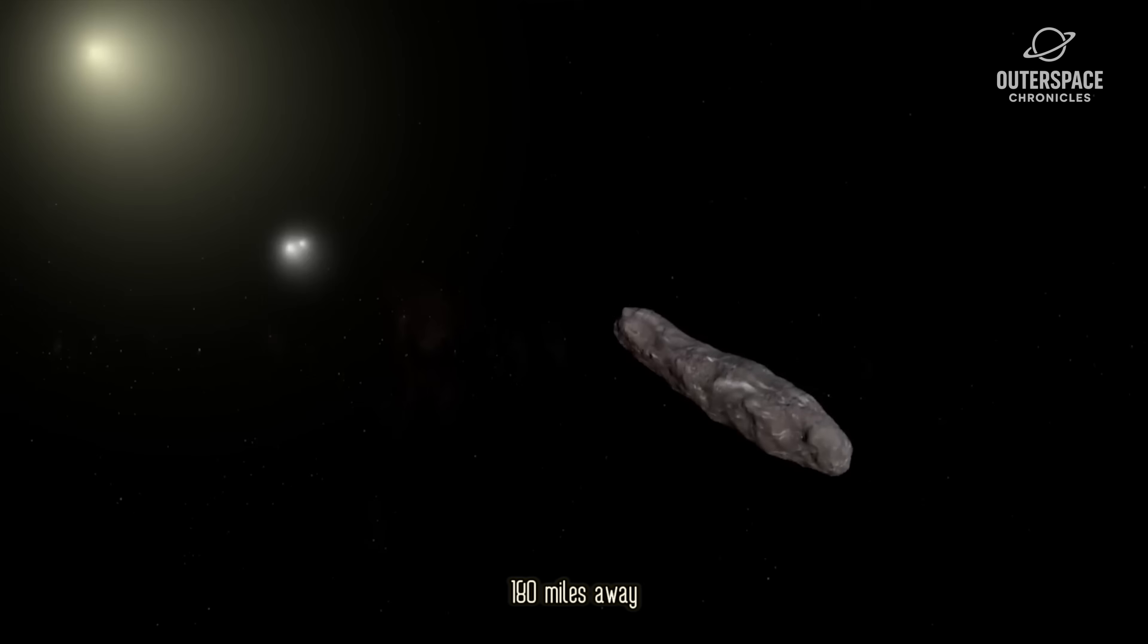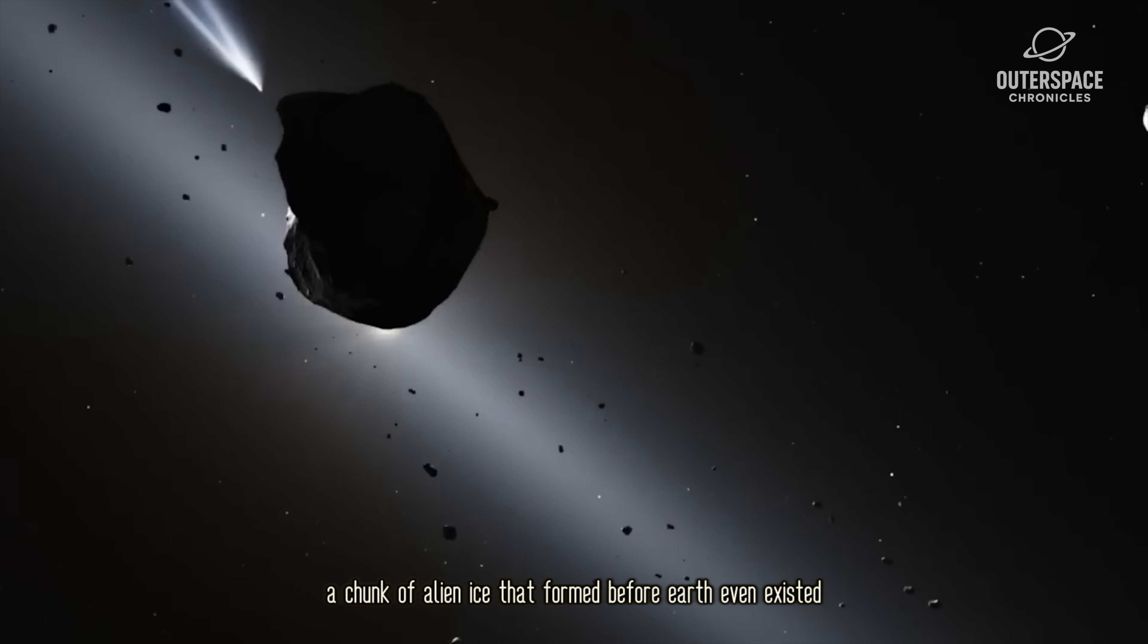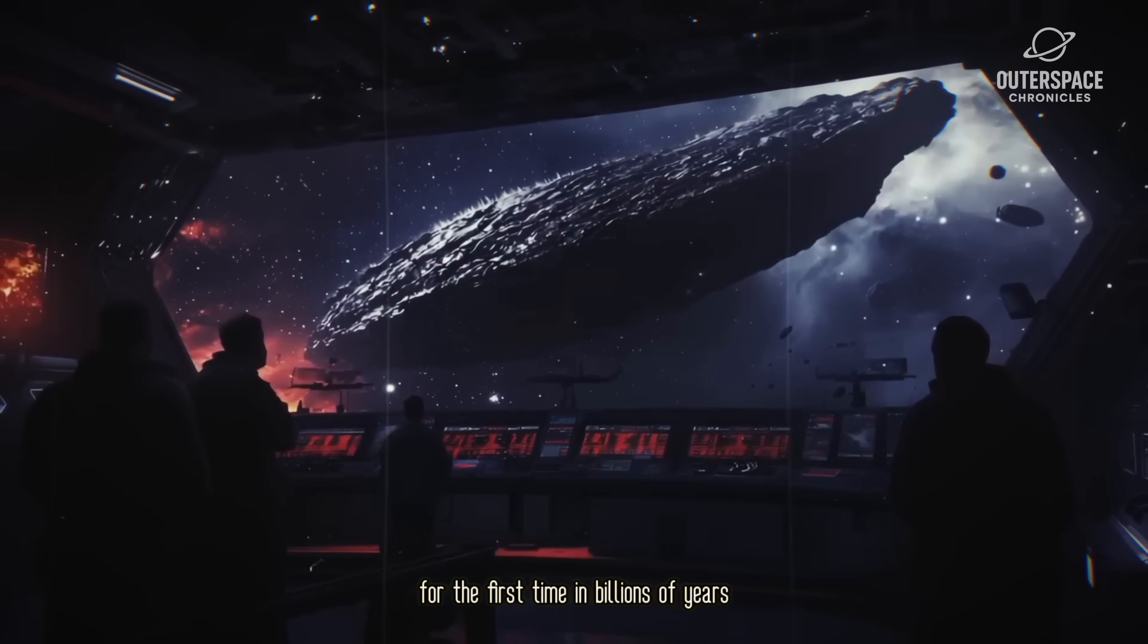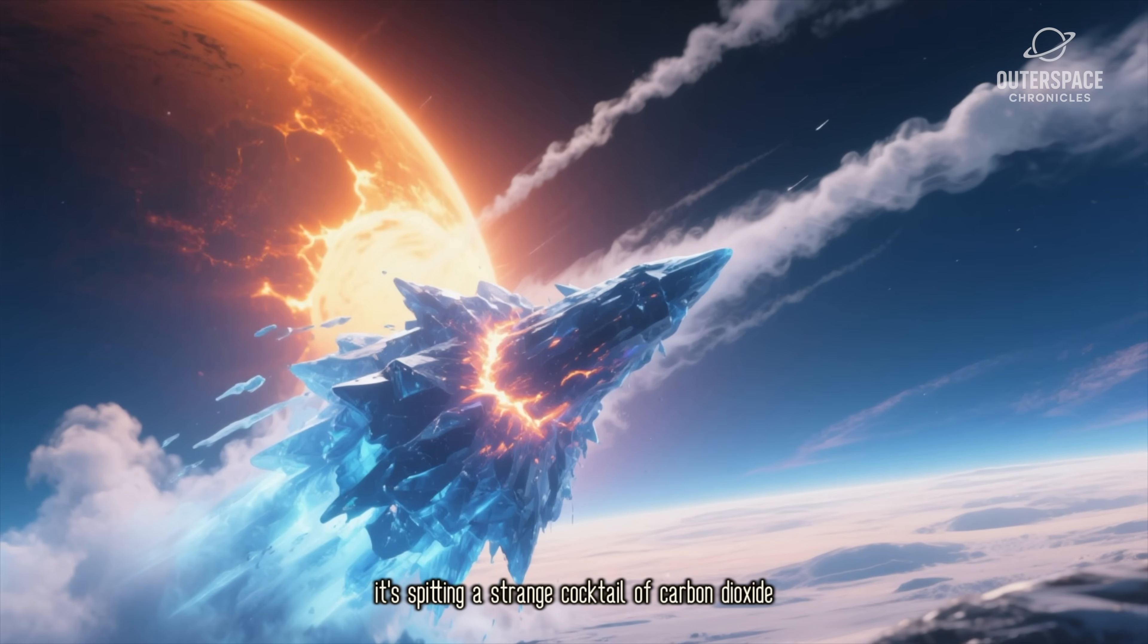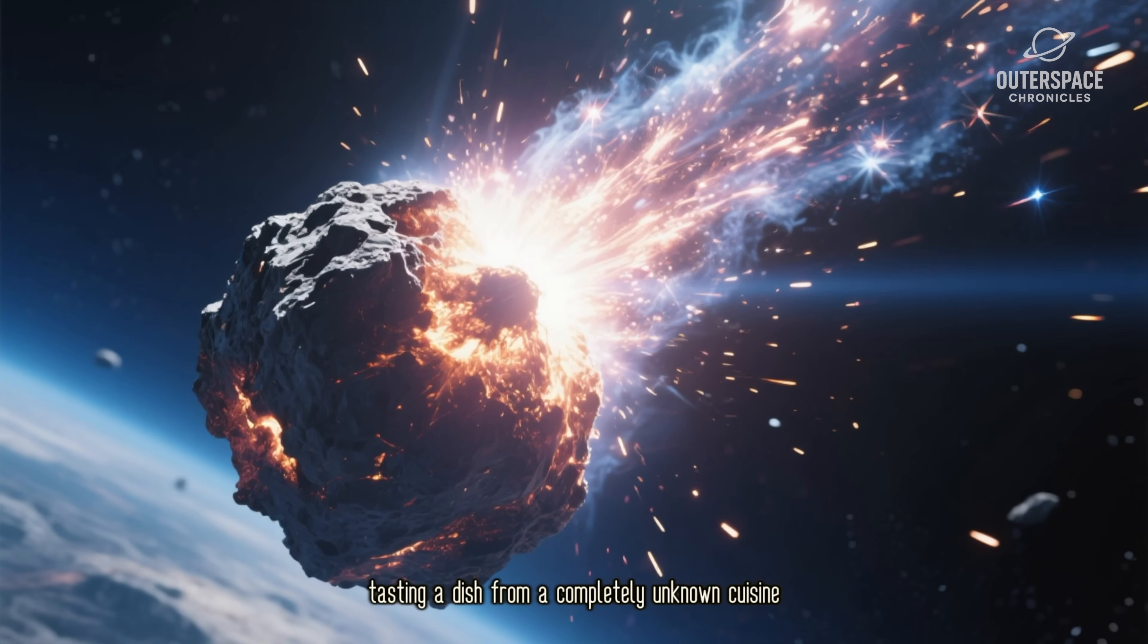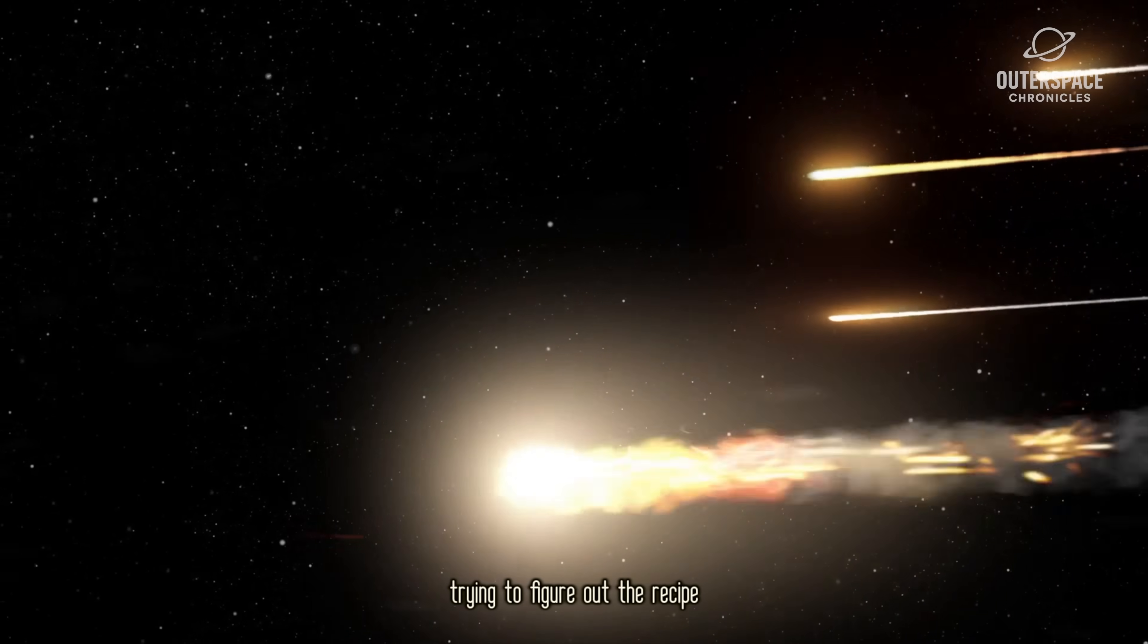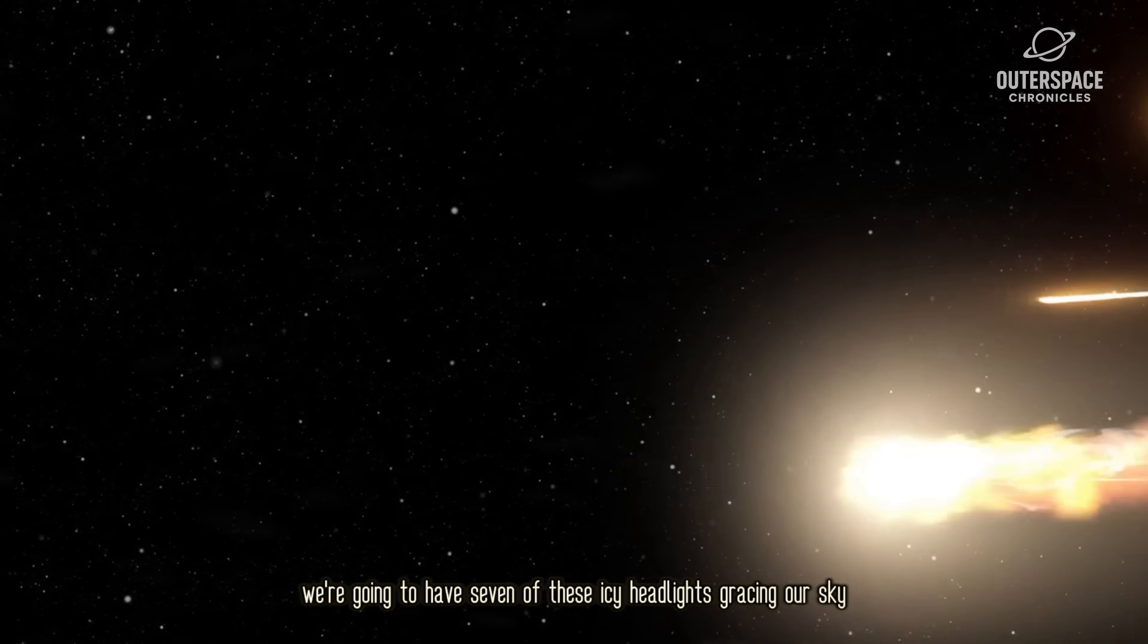Picture this: you're sipping coffee on a quiet morning, thinking about your day. Meanwhile, 180 miles away, a chunk of alien ice that formed before Earth even existed is vaporizing in our sunlight for the first time in billions of years. It's spitting a strange cocktail of carbon dioxide, nickel vapor, and cyanide into our most advanced telescopes.